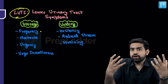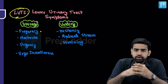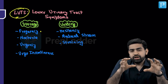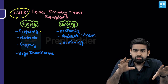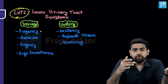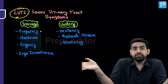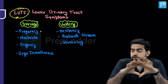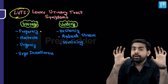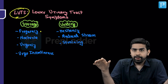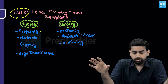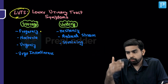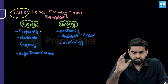The patient will tell you: 'I go to the washroom every 15–20 minutes and only 15–50 ml comes out each time.' If you ask whether they have a sensation before going, they will say no — because it is a neurogenic bladder with no sensation. The patient is not having painful retention; it is a painless chronic retention of urine. That is the key understanding here.